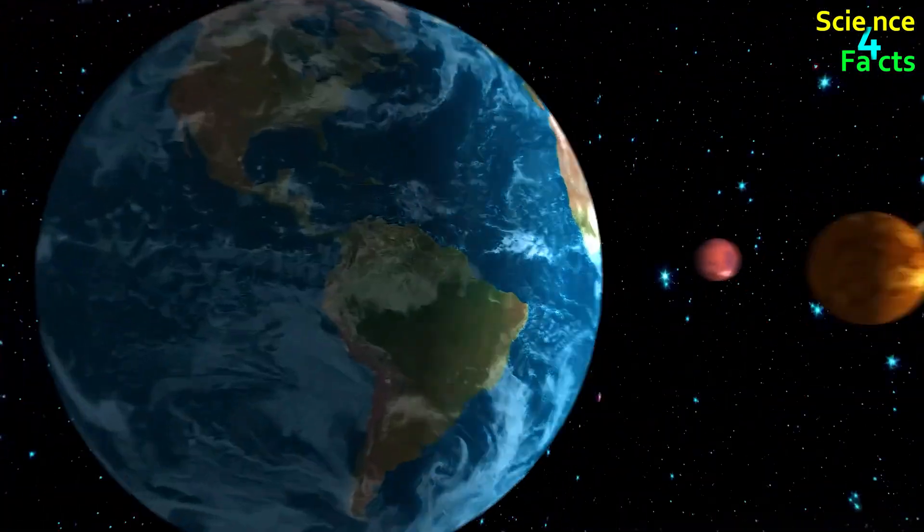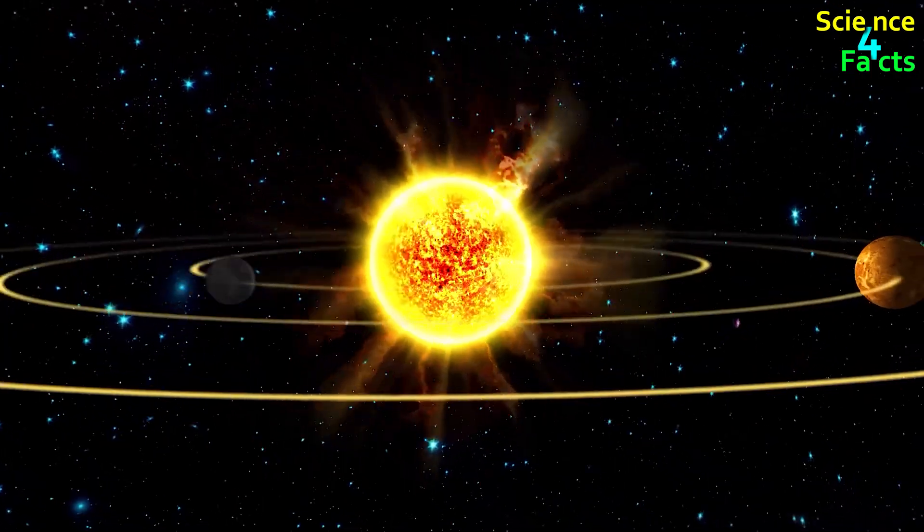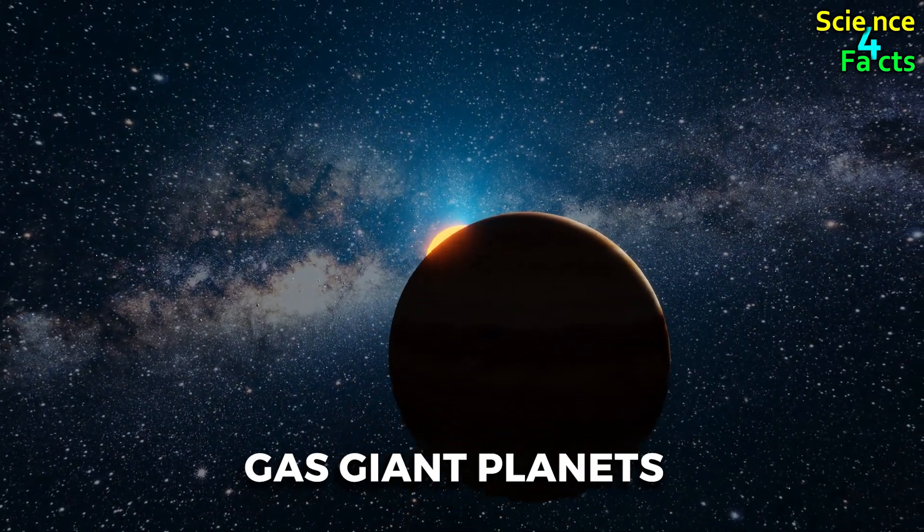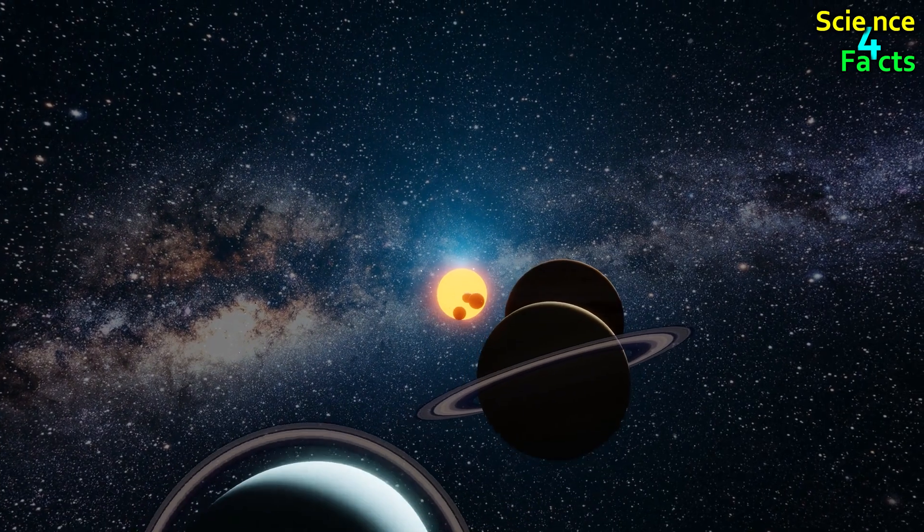With this, all the terrestrial planets in our solar system are over. All that's left are the four gassy planets: Jupiter, Saturn, Uranus, and Neptune.